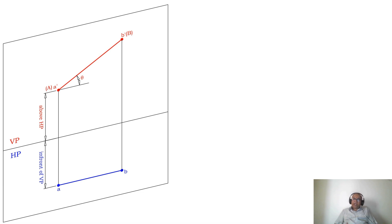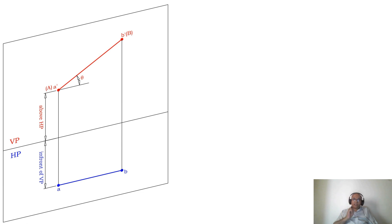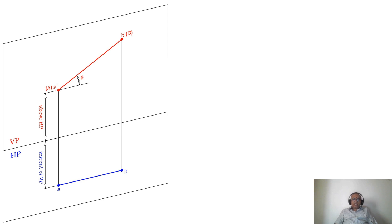If the line is parallel to VP, I can see the true length in VP. That line is in true length because it is parallel to VP. Where should I look for a line parallel to VP? Since the line is parallel to VP, the image will fall on the horizontal plane. In other words, if the line is with respect to VP, you have to see it in HP; if the line is with respect to HP, you can see it in VP. Now the line is parallel to VP, so the true length is in VP.